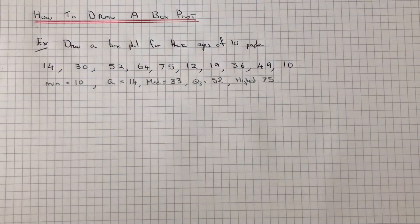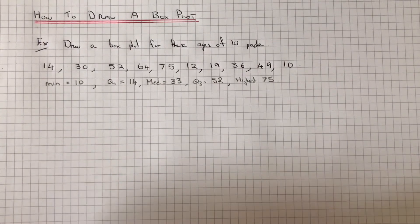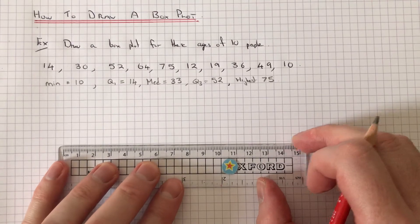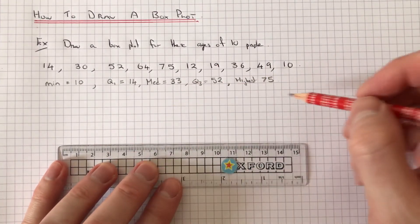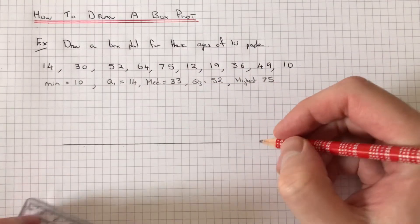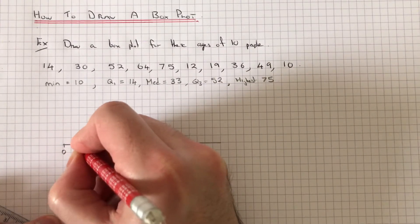Okay, so those are our five key values for our box plot. So now we can get on and draw it. So we just need an x-axis. So now let's just go from 0 up to 100. Let's go along in 10s.